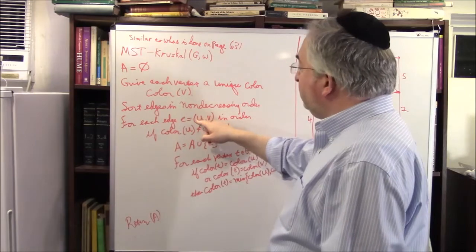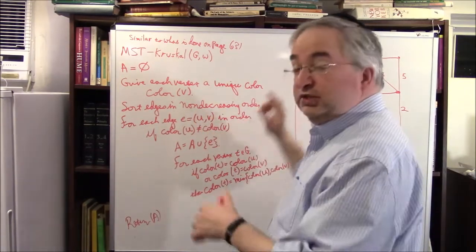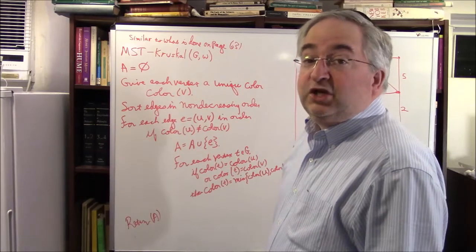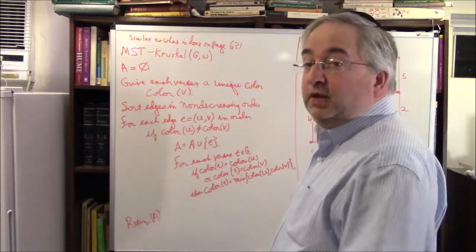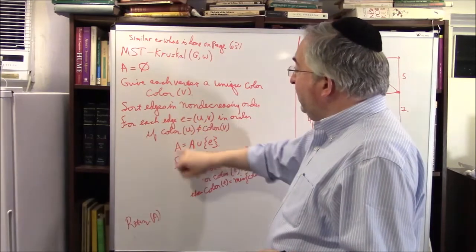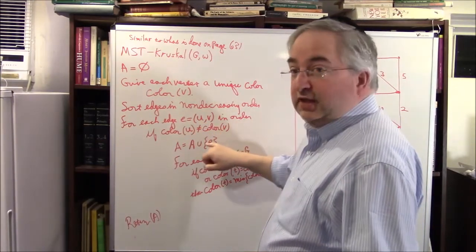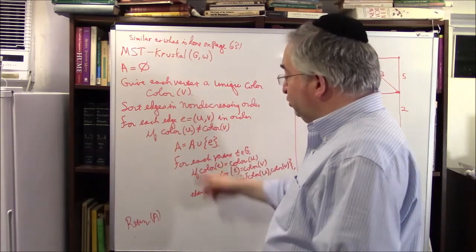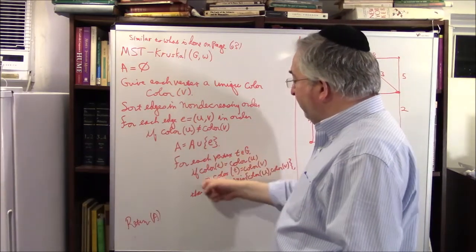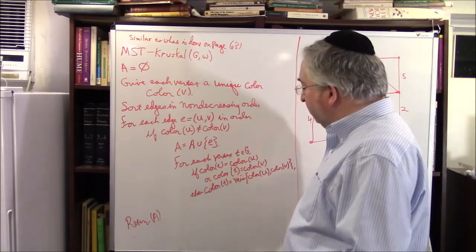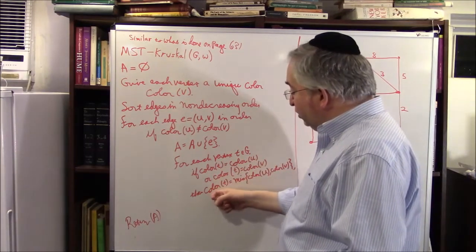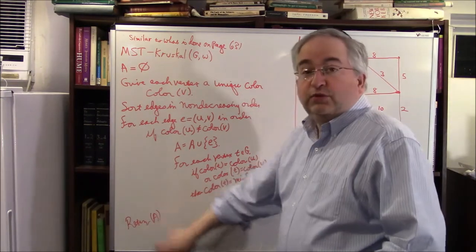Then for each vertex T in the graph, if color(T) equals color(U) or color(T) equals color(V), change the color to the smaller of color(U) or color(V). At the end, return A. At the end of this algorithm, all vertices in the graph are going to have color A — that's what we're aiming for. Here's the example graph. We don't need our vertices to have names; what they are going to have is colors.